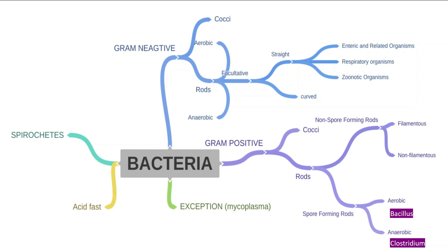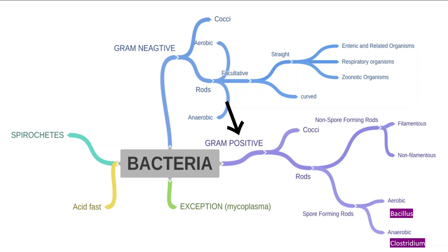Bacteria are classified into spirochetes and acid-fast organisms on the basis of acid-fast stain, with mycoplasma as an exception. Bacteria are also classified on the basis of Gram staining into gram-negative and gram-positive. Since Clostridium difficile is gram-positive, we focus on that category.